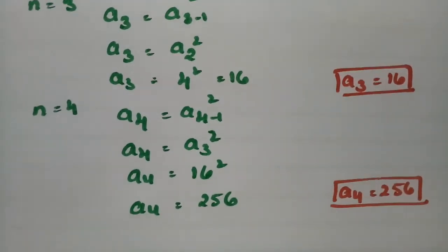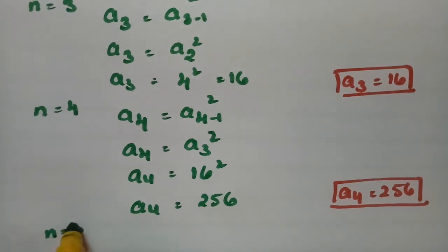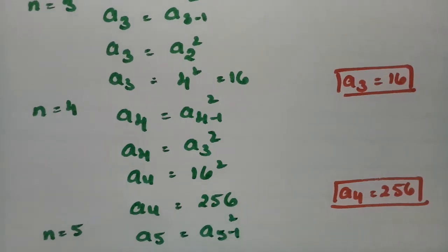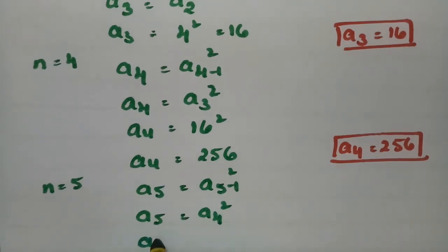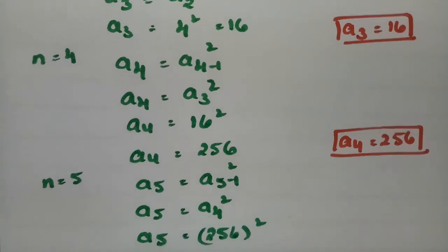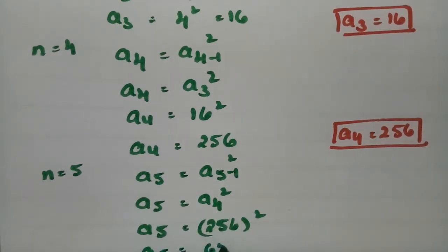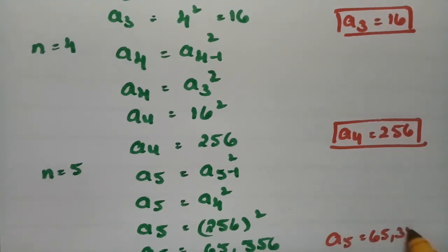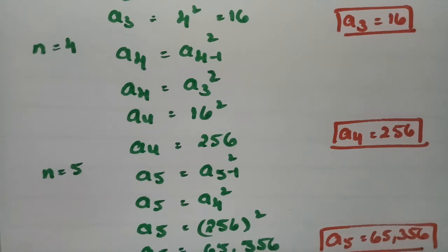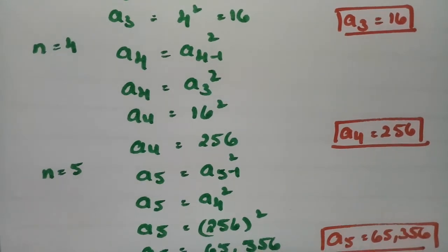Now put n = 5. So a_5 = (a_{5-1})² = (a_4)². a_4 is 256, so a_5 = 256² = 65,356. We got a_5 value as 65,356. So these are all the first five terms.